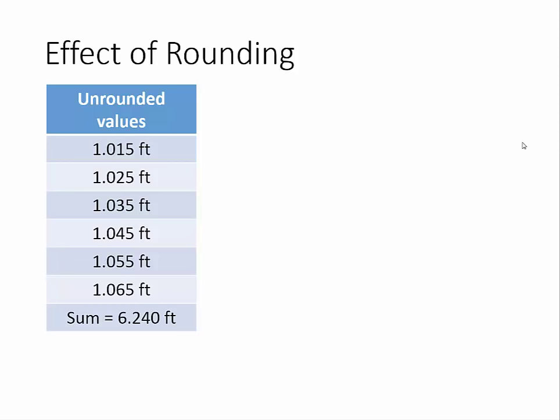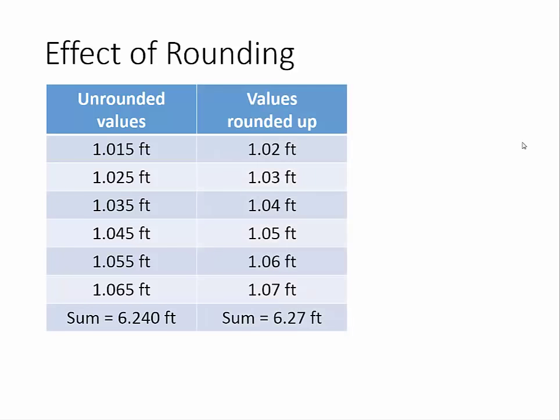However, such precision is typically unwarranted. So if we round each value upward, as we've nearly all been taught, then the sum at the bottom of these six rounded values is larger than the sum of the unrounded values. Well, this makes sense, doesn't it? Once again, the sum of these six rounded values is larger than the sum of the unrounded values.